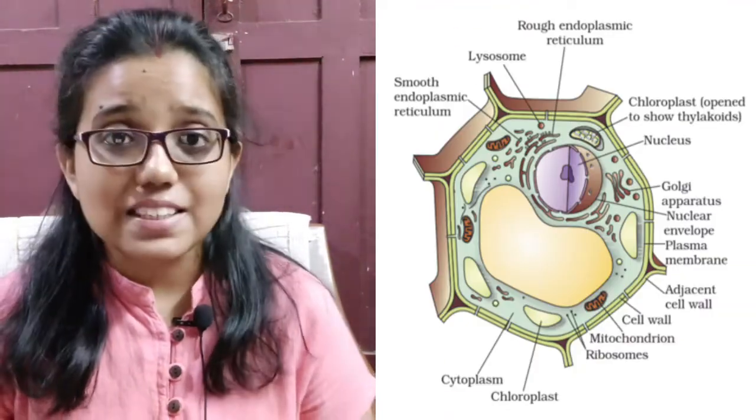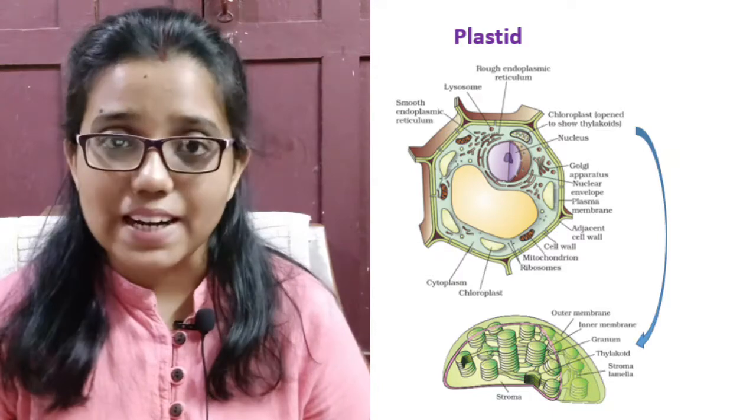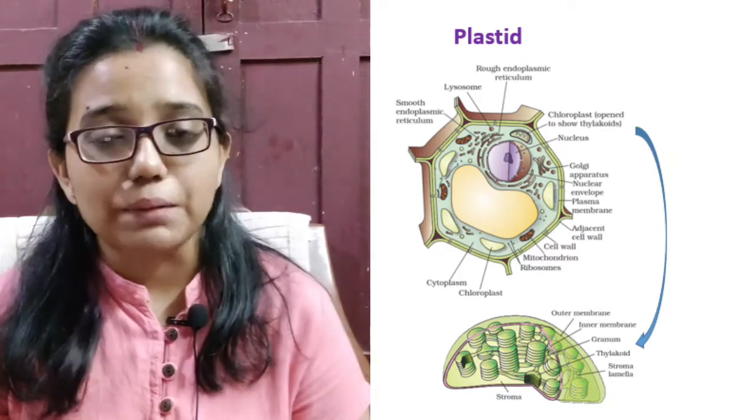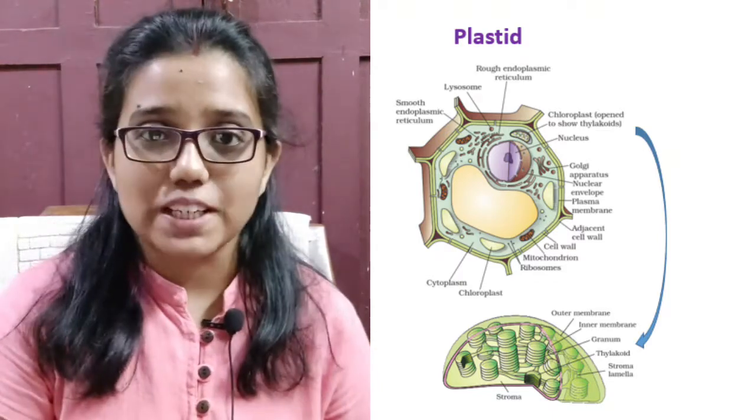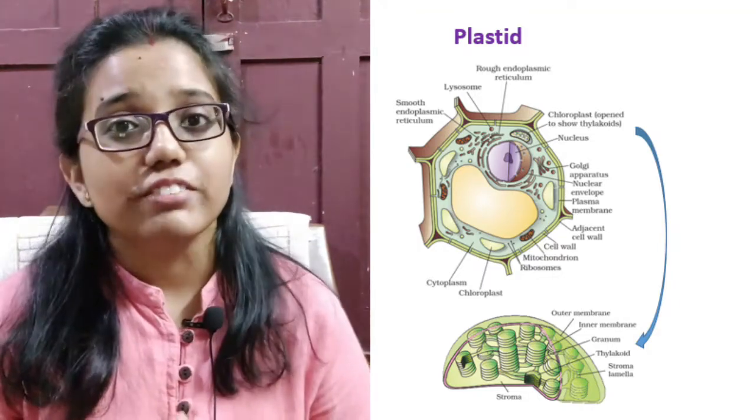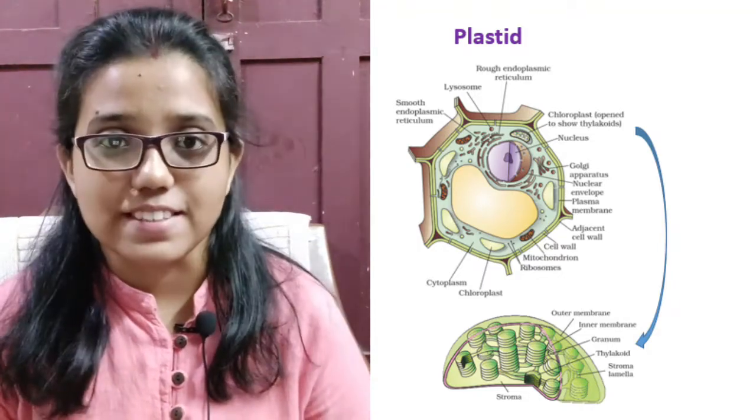Next we have plastids which are only present in plant cells. Plastids are of two types: chloroplast and leucoplast. Chloroplast contain chlorophyll which are very important in photosynthesis.